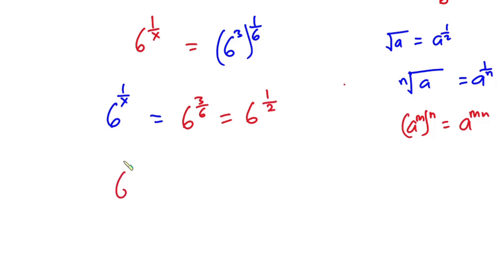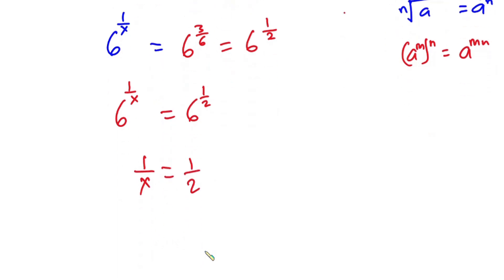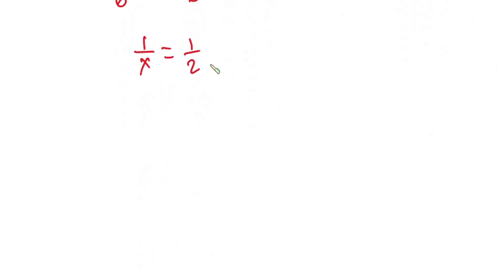So we have 6 to the power 1 over x is equal to 6 to the power 1 half. The bases are equal, so I can equate the exponents. So we have 1 over x is equal to 1 half. Now let's cross multiply — so we have x is equal to 2. And this is our final answer.